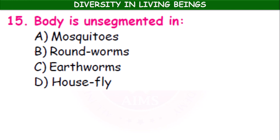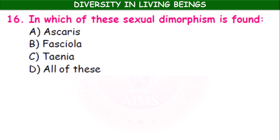In arthropods, helminths, and annelids the body is segmented. In which of these is sexual dimorphism found — Ascaris, Fasciola, Taenia, or all of these? In Ascaris lumbricoides (nematodes), the sexes are separate.